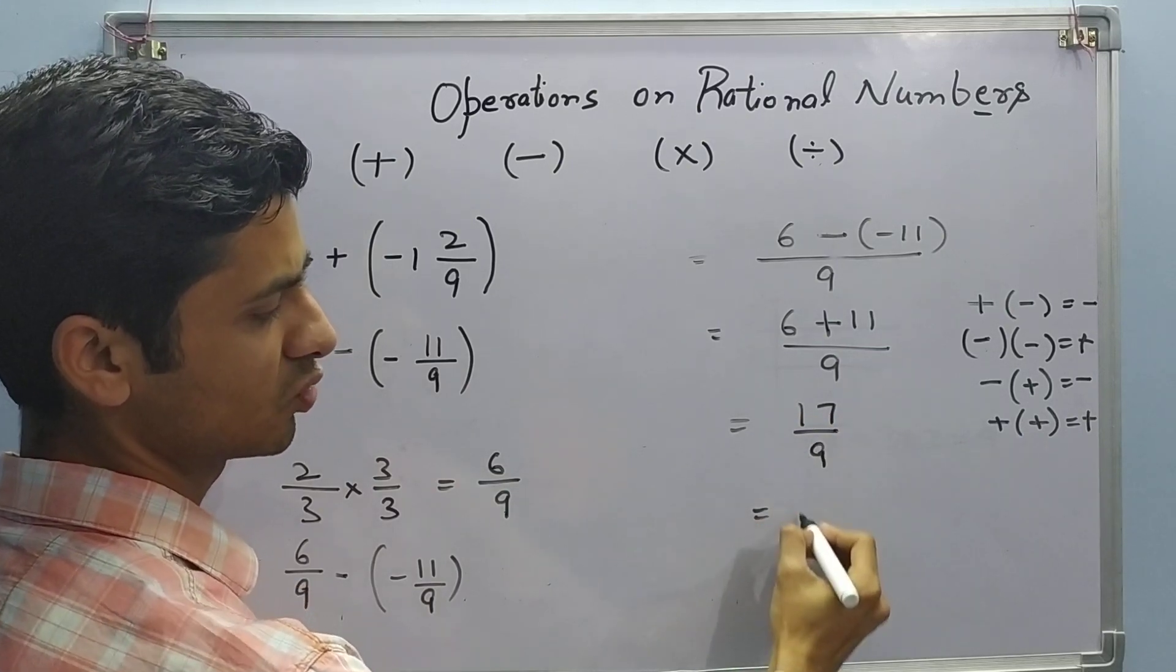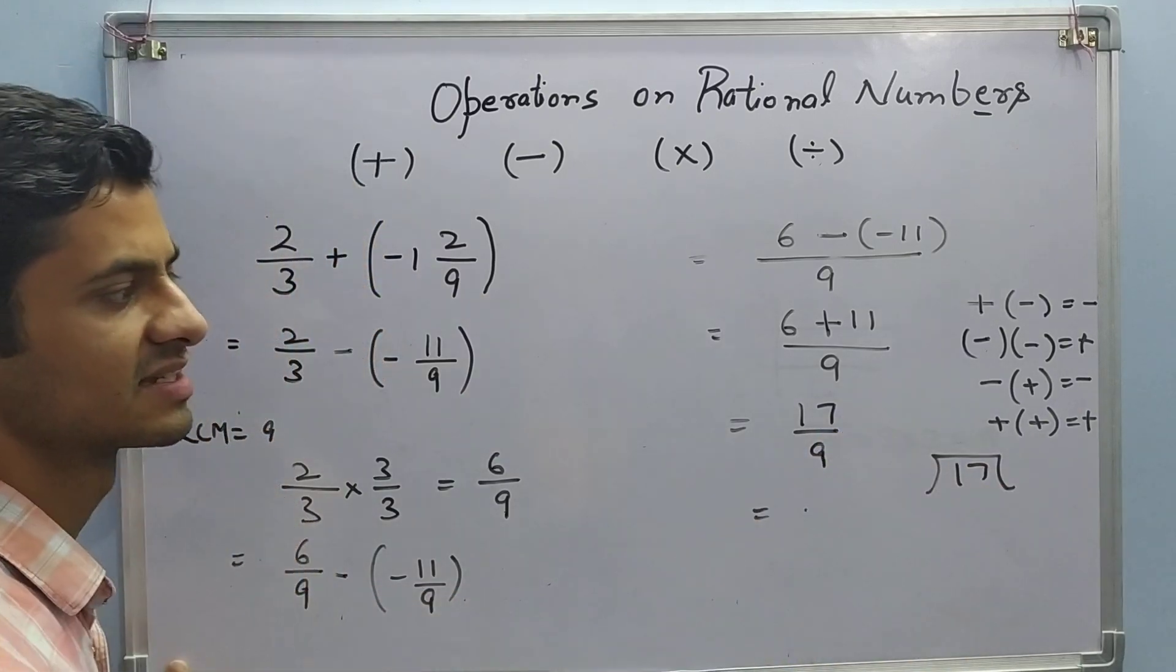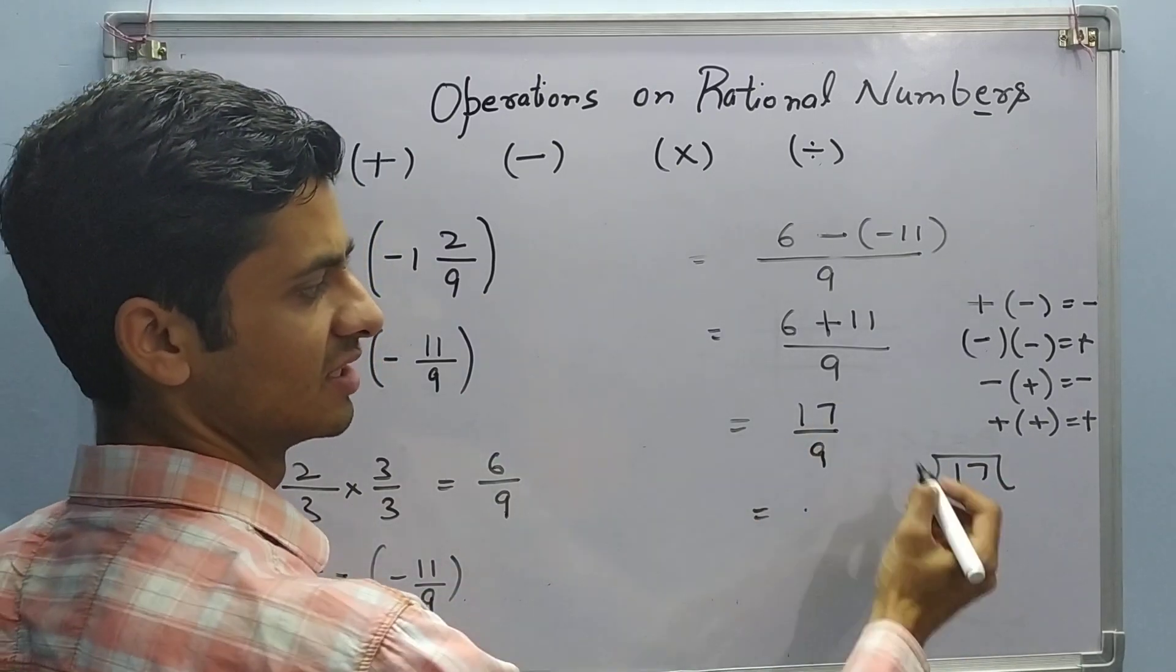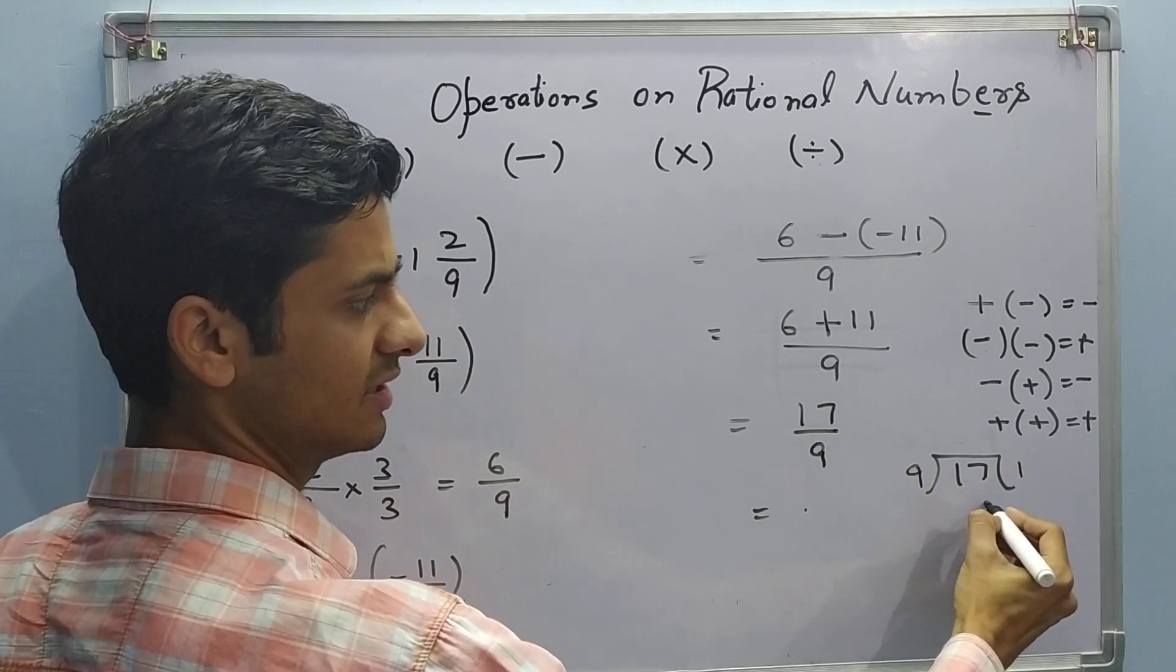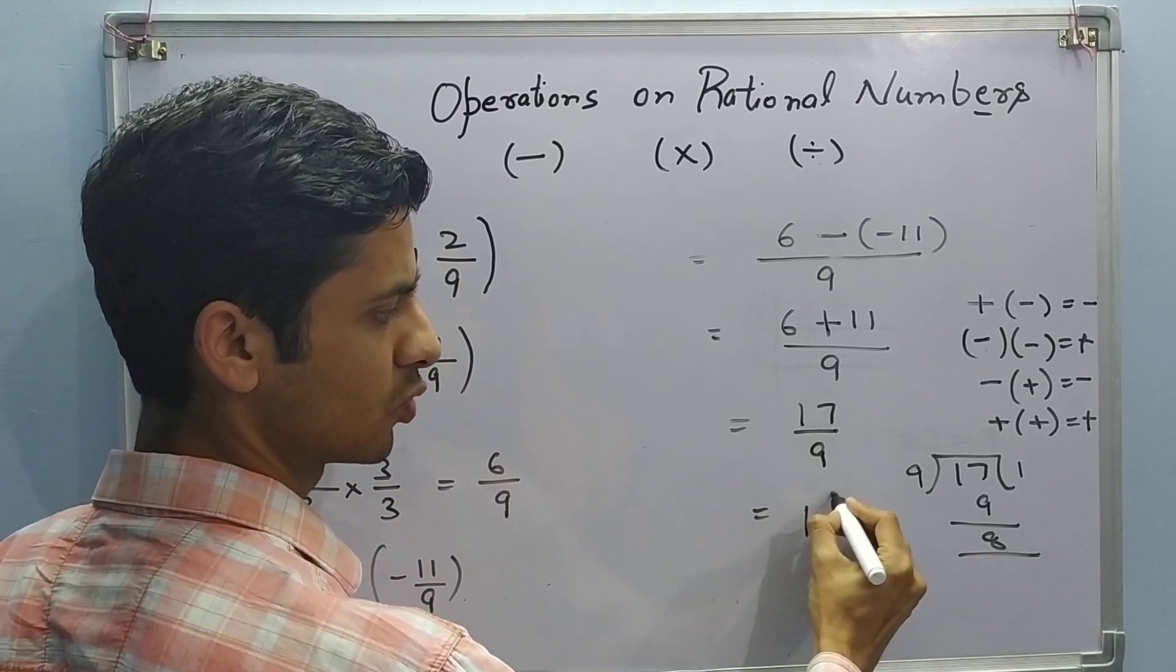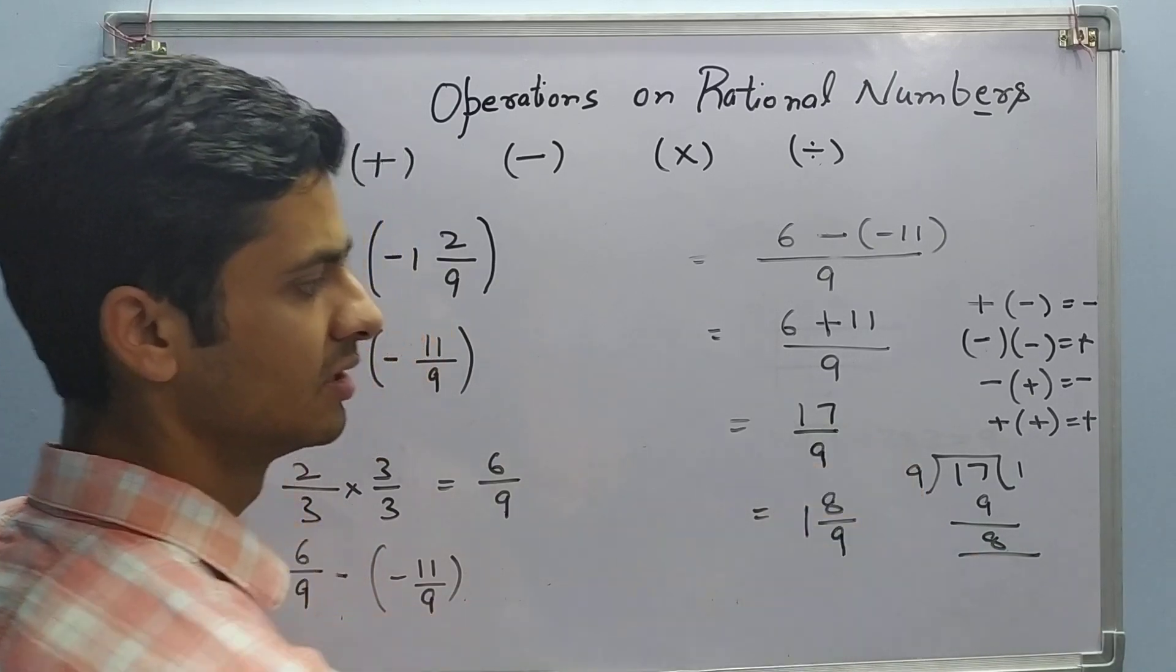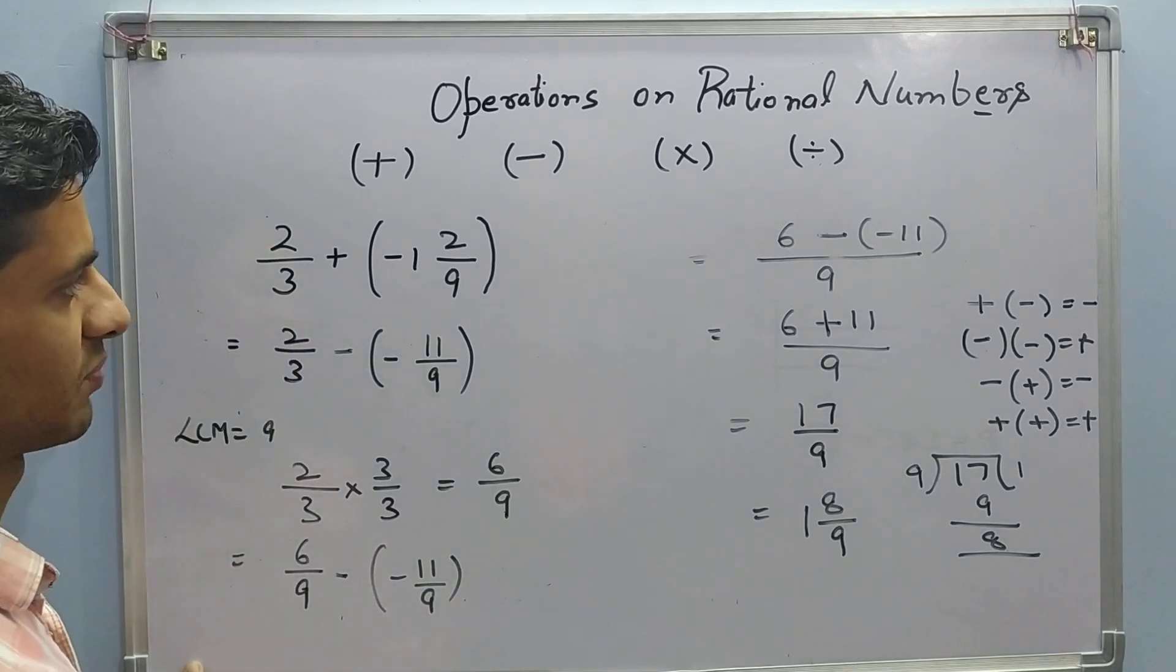In mixed fraction you can write it as 17. How to convert 17 upon 9 in mixed number. Dividing by 9, 9 ones are 9. What remains is 8. So it can be written as 1 whole 8 upon 9. So this is about both addition and subtraction.